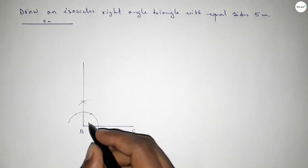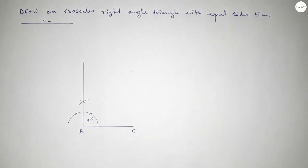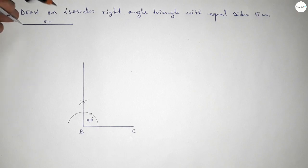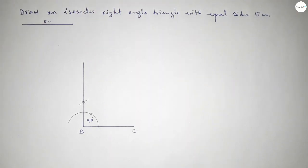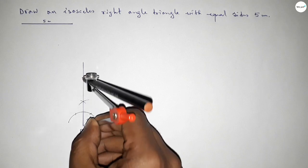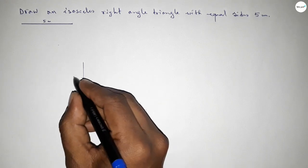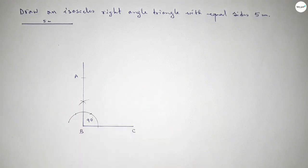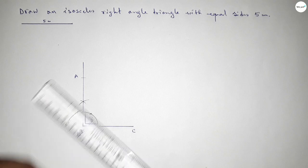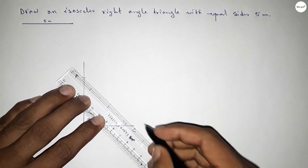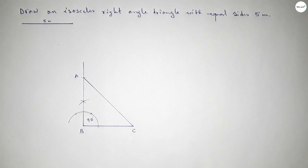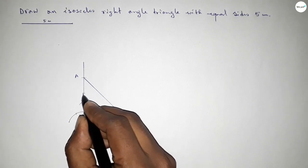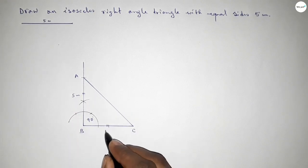This is a 90 degree angle. Now taking the length 5 centimeters using the compass and putting the compass on point B, cutting here to take point A. Now joining A and C to get the isosceles right-angle triangle. This side and this side are equal.